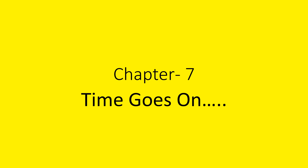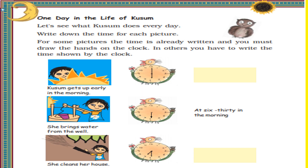Let us continue with the chapter Time Goes On. One day in the life of Kusum — let's see what Kusum does every day. Write down the time for each picture. For some pictures the time is already written and you must draw the hands on the clock; in others you have to write the time shown by the clock.